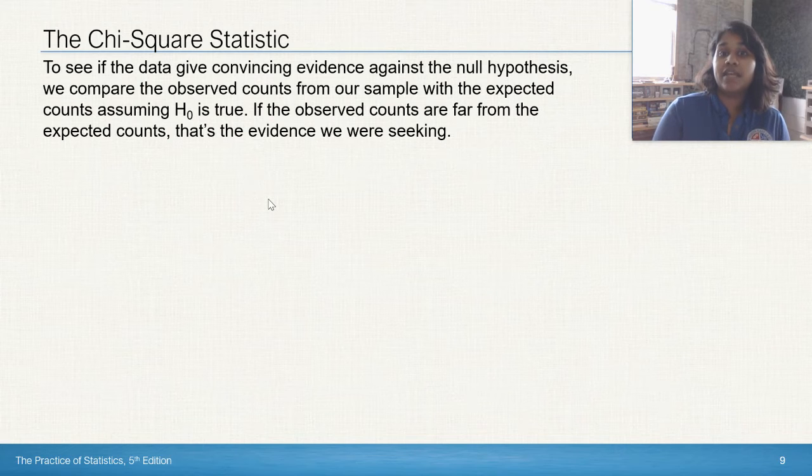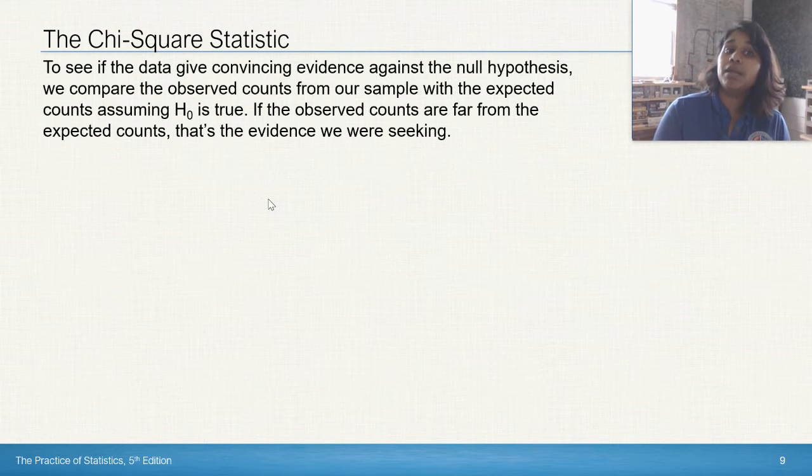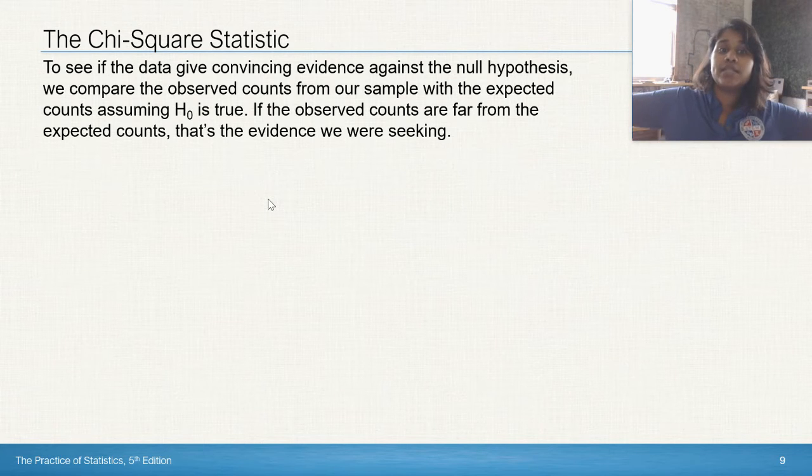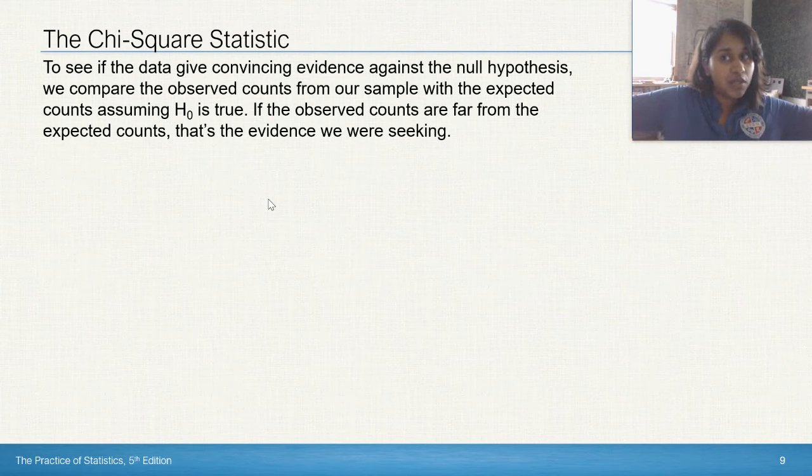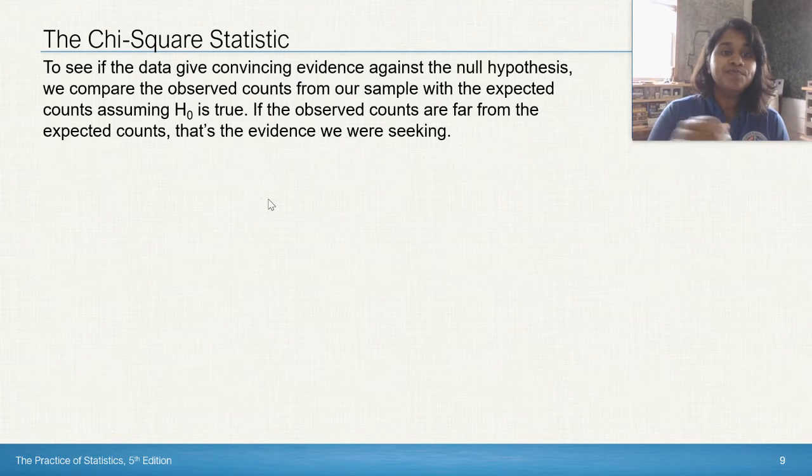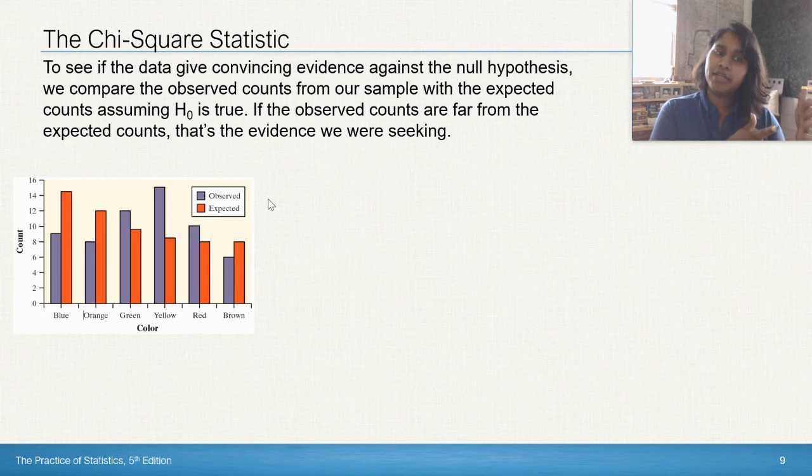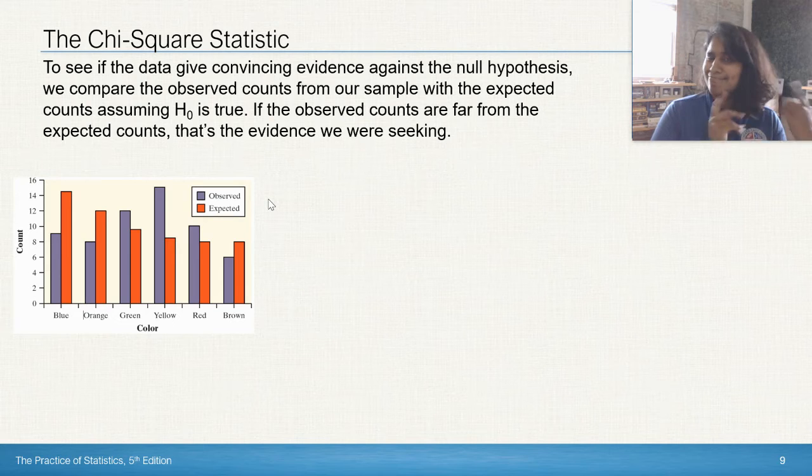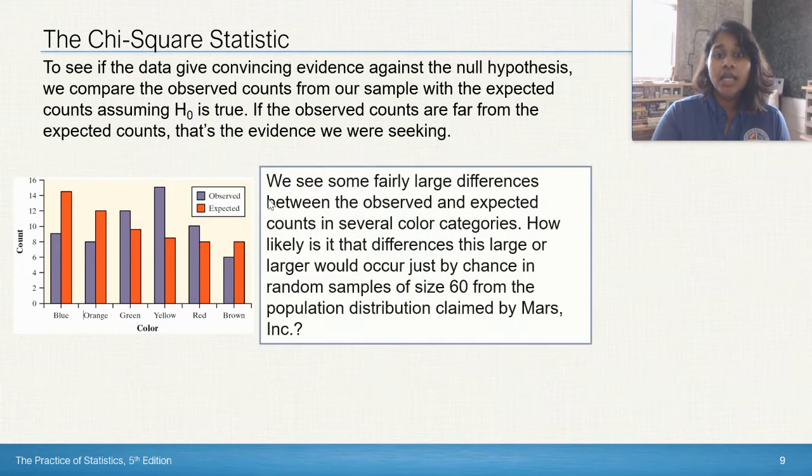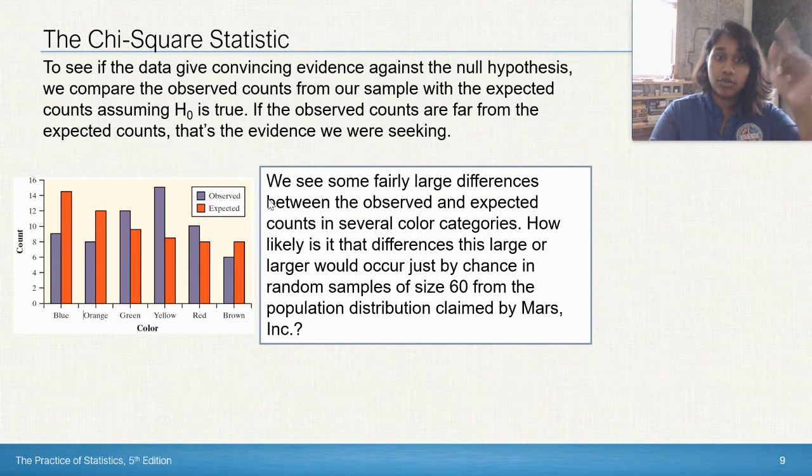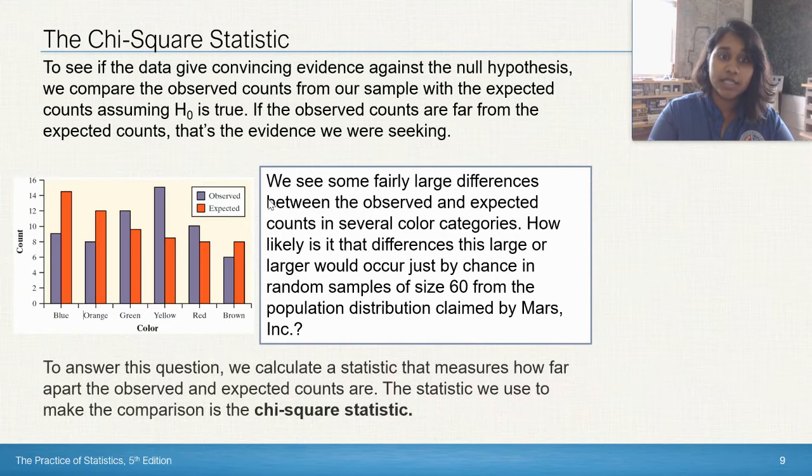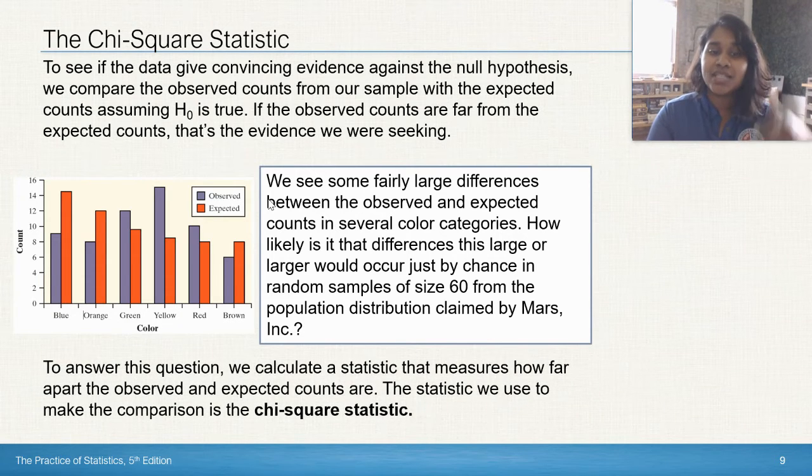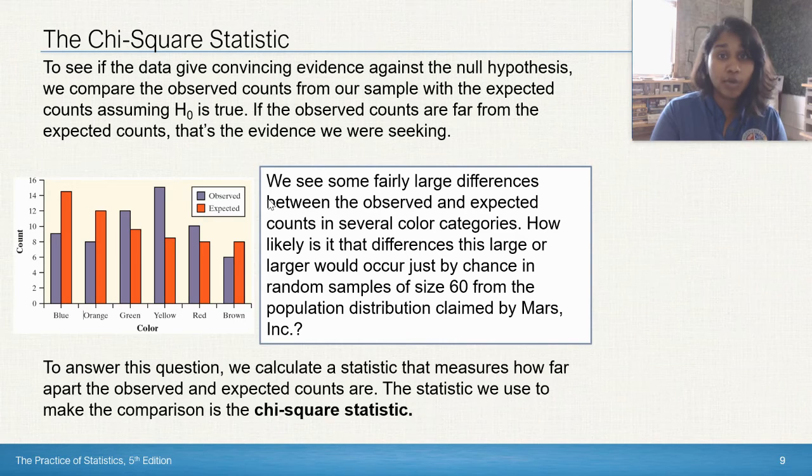To see if the data gave convincing evidence against the null hypothesis, we compared the observed counts from our sample with the expected counts, assuming that the null is true. If the observed counts are far enough from the expected, that's the evidence that we're seeking so we can reject the null hypothesis. So if we look at it visually, can we really say that there is a distinct difference between the observed and the expected? That's not enough for us. So we could maybe notice some things. You can read through this little paragraph for yourself to see. But the bigger thing we need to do is actually use the chi-square statistic. So formula coming up.